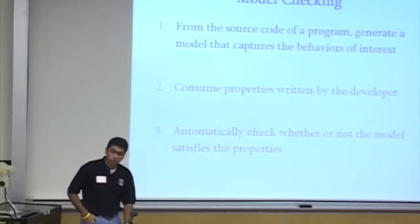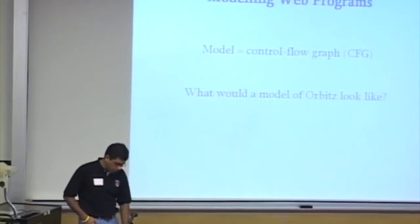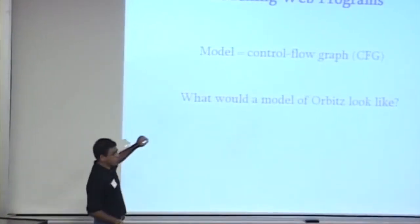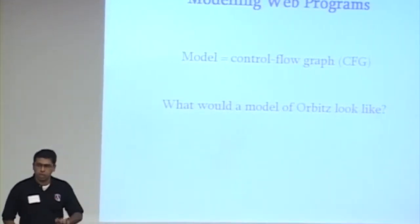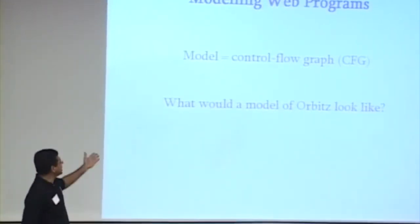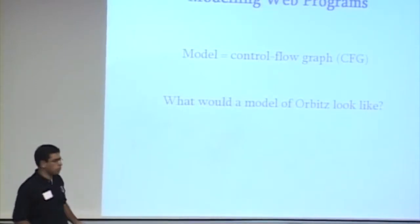So let's look at generating the model of the source in the first place. There's an easy way to generate a model of the source, which is just take a control flow graph, right? We'd like to reduce programs to state machines because that's how model checking works. Easy. Control flow graph gives us a basic state machine.